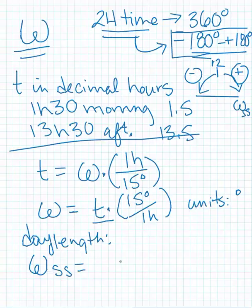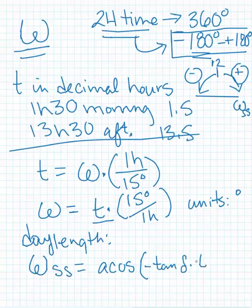And so if I wanted to calculate the sunset, we find that I need to calculate the arc cosine, or the inverse cosine, of the negative tangent of the declination times the tangent of the latitude phi. And I might have switched these two guys around in the textbook, but you're going to get the same answer.